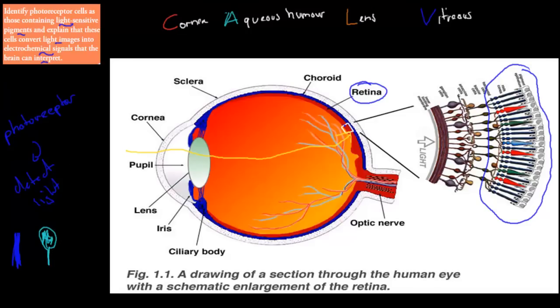So, light has traveled in. We use our cornea, aqueous humor, lens, and vitreous humor to focus light on the retina. What we're talking about now is what's happening on the retina — that red layer. That's what we're discussing now.